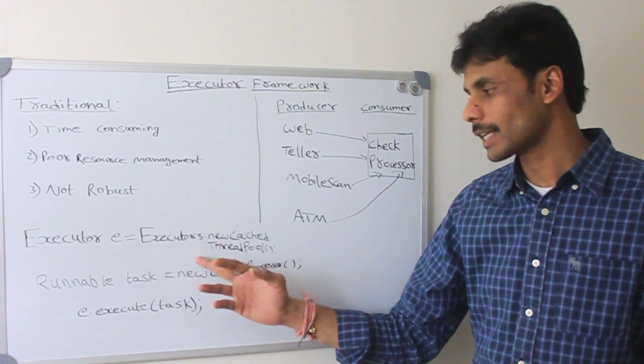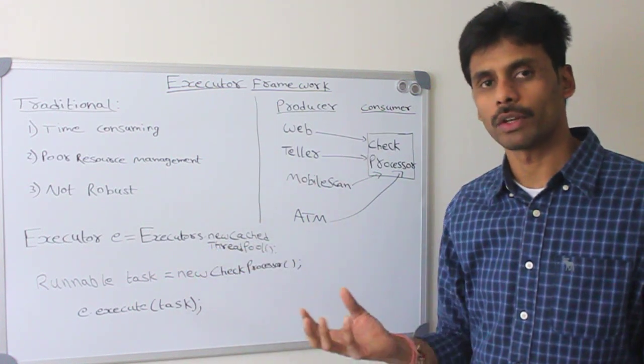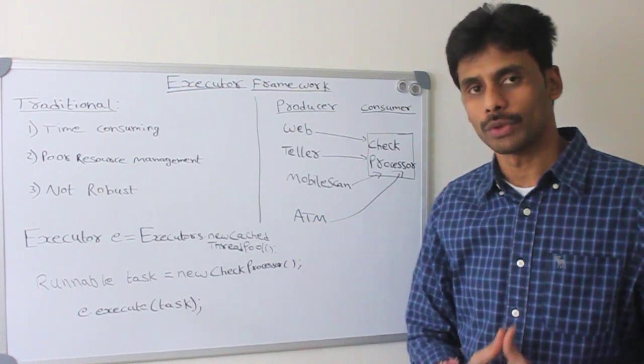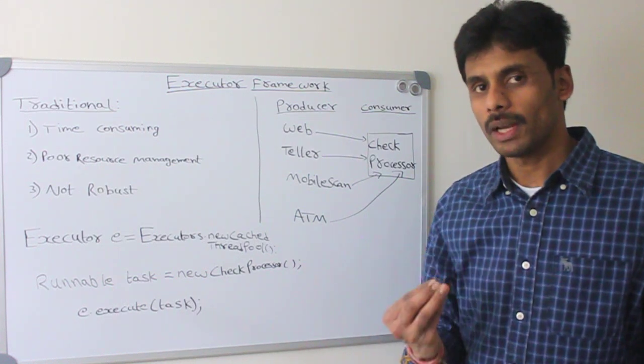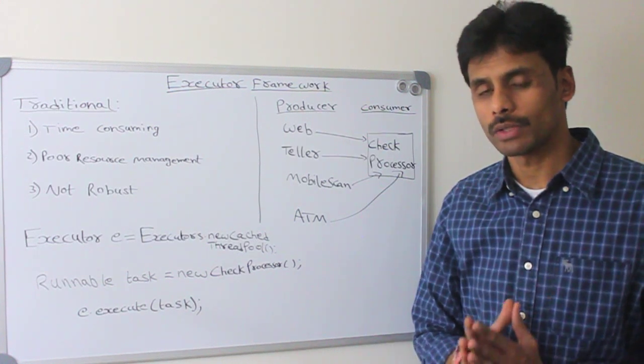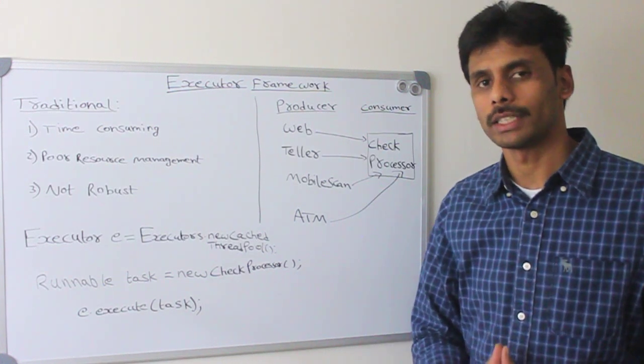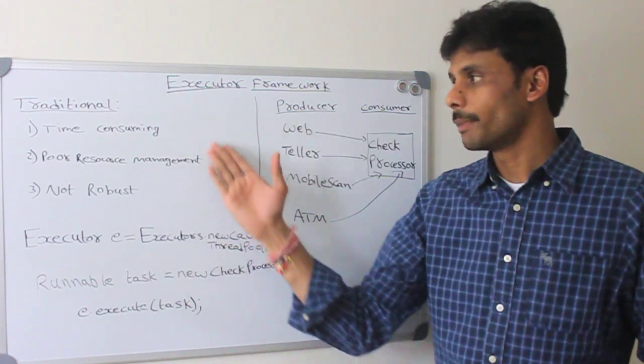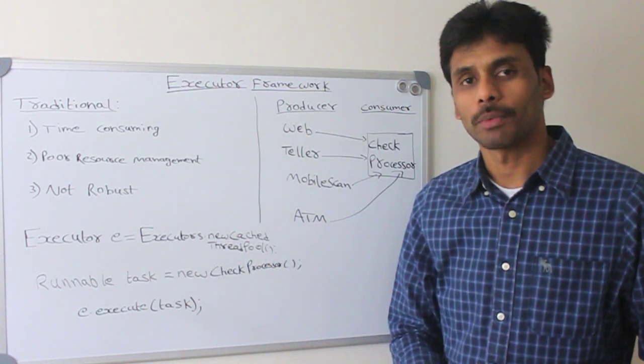There are multiple ways to create the thread pool from the executor framework. And I will show you all the different ways in the future. But simply, the executor framework which was introduced in Java 5 gives us a way to create a pool of threads and it maintains the life cycle, and it overcomes the limitations of the traditional thread creation process.